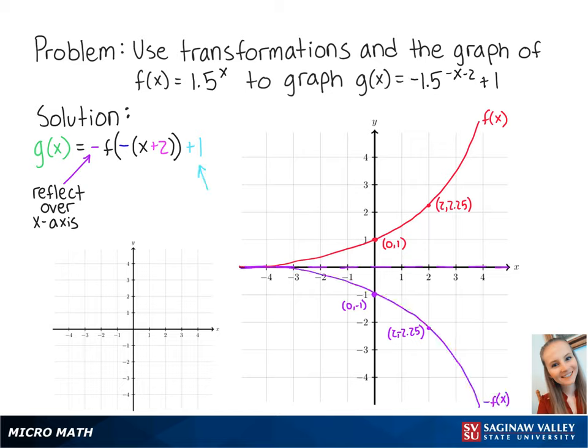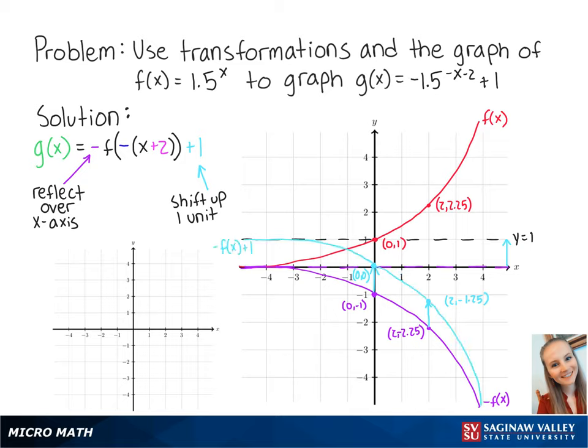Adding 1 to the function means that we will shift our new graph up by 1 unit. So our new points are at (0, 0) and (2, -1.25). Also notice that the asymptote on the x-axis also shifts up by 1 unit. So connecting these points, we get the graph of negative f of x plus 1.